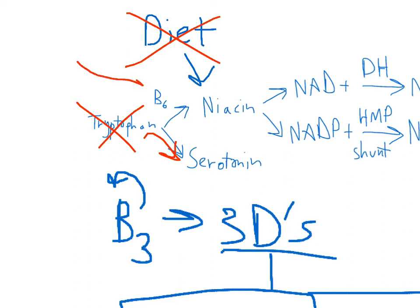And finally, the drug INH, which is used to treat TB, actually binds with B6 and inactivates it. So if you have a B6 deficiency, then you won't be able to make niacin, because B6 is a cofactor.